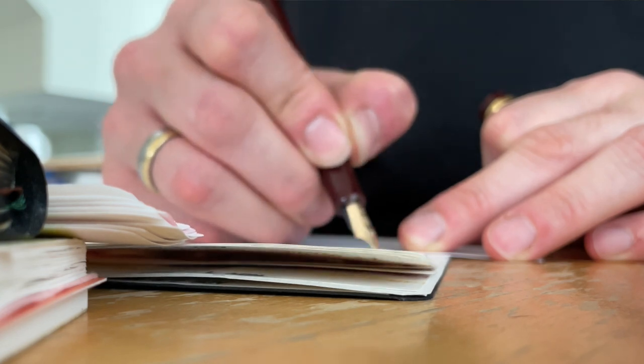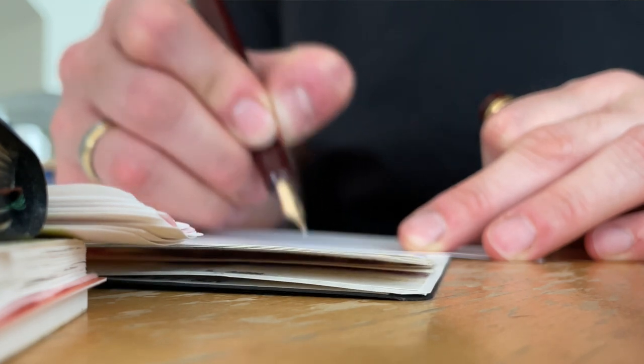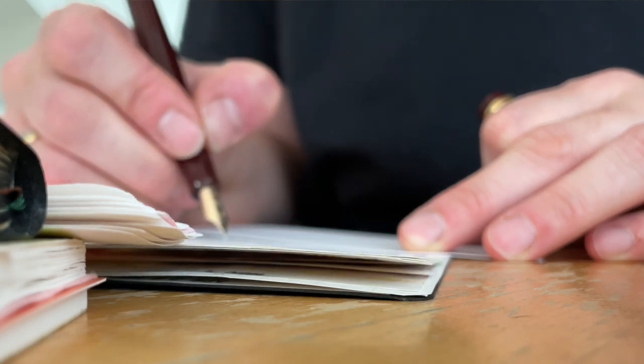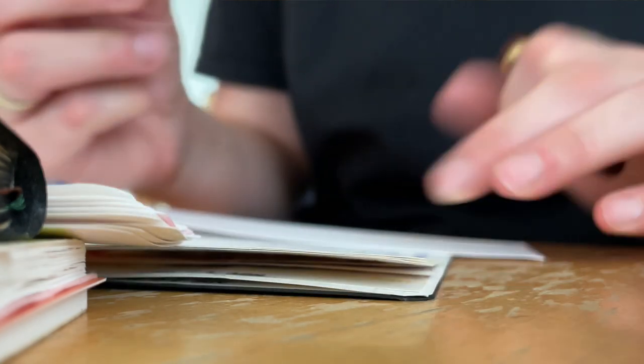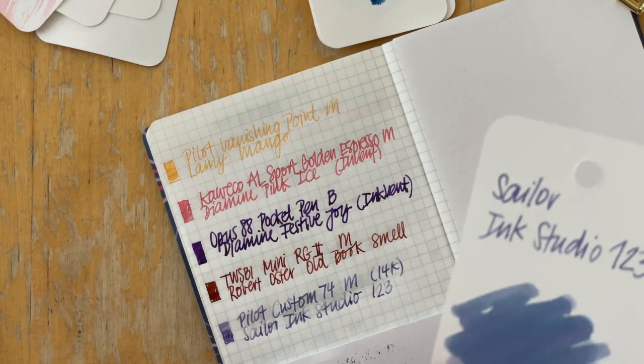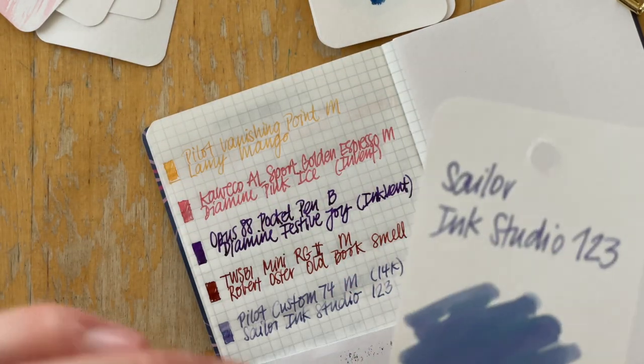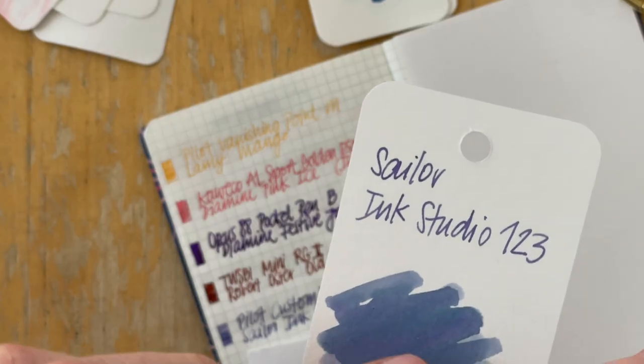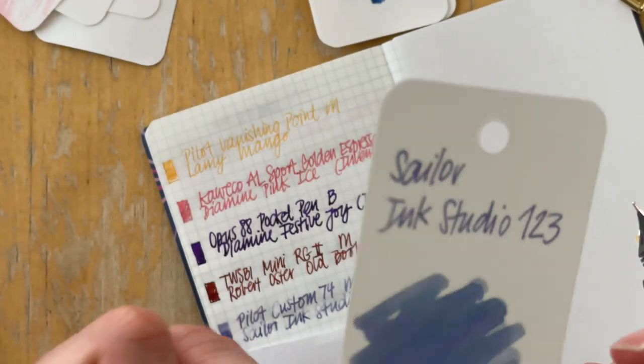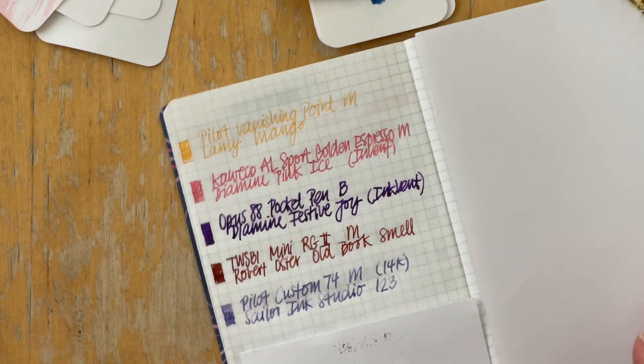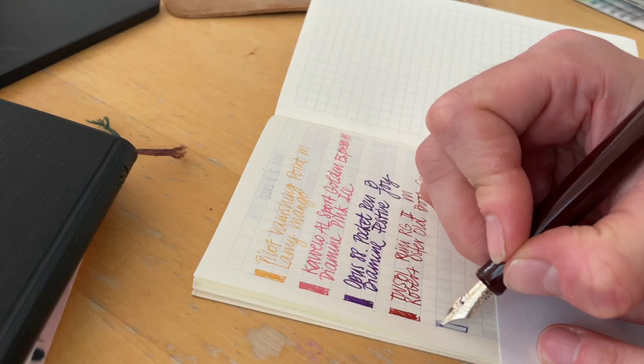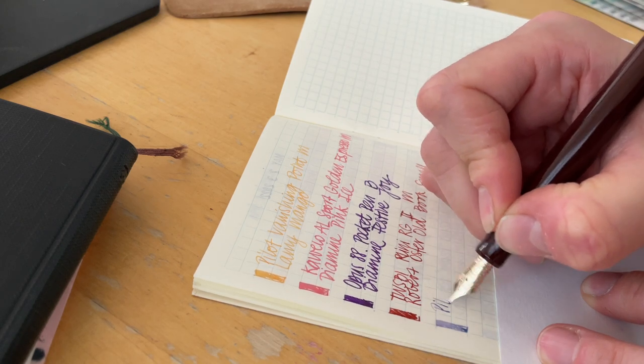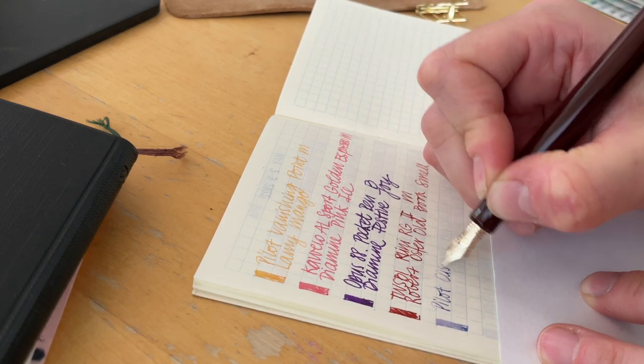Let me write 14K so that it indicates the gold nib. This is Sailor ink studio one two three. I really like how the shading, this is a chromo shading ink. You can see the purple, the blue, and then there's kind of like a teal turquoise to be seen here. That comes out on the Tomoe River paper. Interestingly enough, this doesn't write well on the MD paper. I don't know if it's the ink. Well, it is because the Robert Oster ink that I had inked in here before.